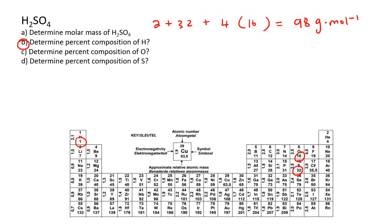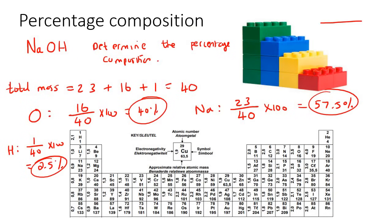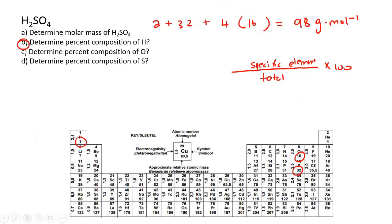The next question says: determine the percent composition of hydrogen. To work out percentage composition, we need the total at the bottom and the specific element we're talking about, then multiply by 100 — just like with the Lego blocks. Hydrogen has a total mass of 2 because there are two hydrogens in this molecule. So 2 divided by 98 multiplied by 100 gives 2.04%, rounded to two decimal places.